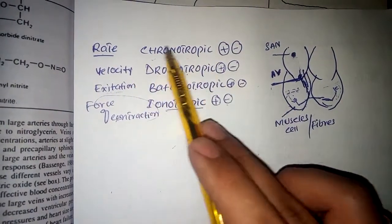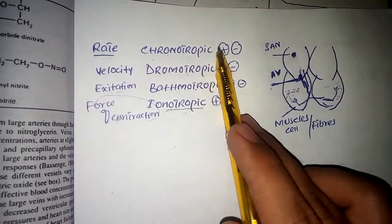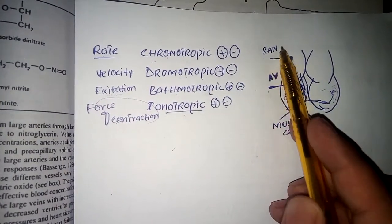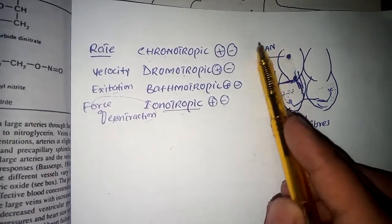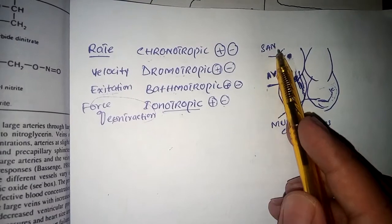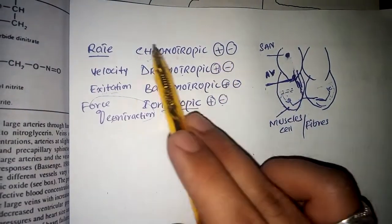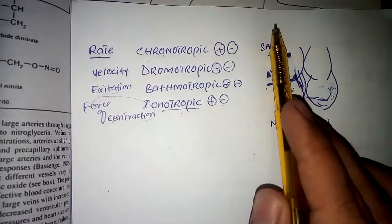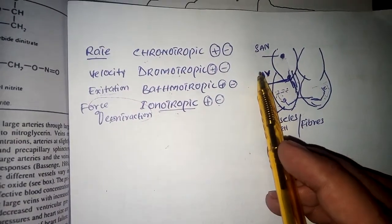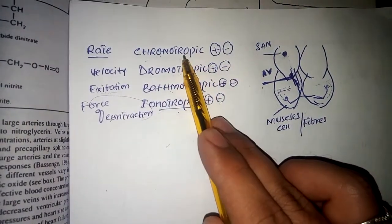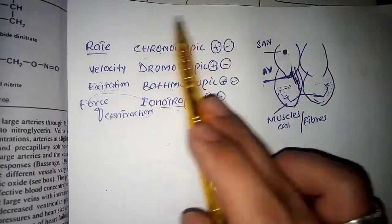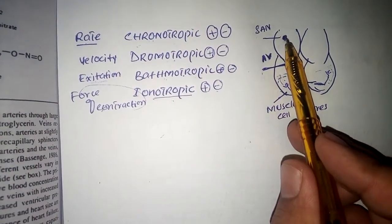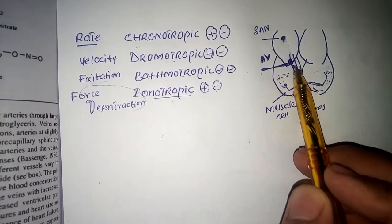If the heart rate is decreased, that is called a negative chronotropic effect. This depends on the firing of the sinoatrial node — if it fires frequently, we call it an increased heart rate or positive chronotropic effect, and if it fires less, we call it a negative chronotropic effect or decreased heart rate.